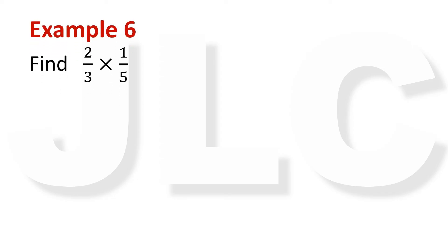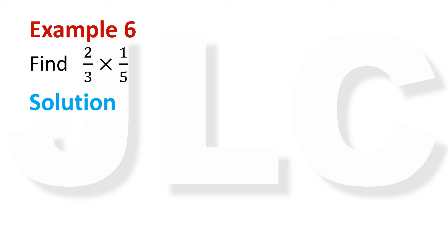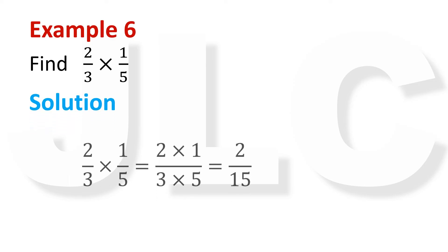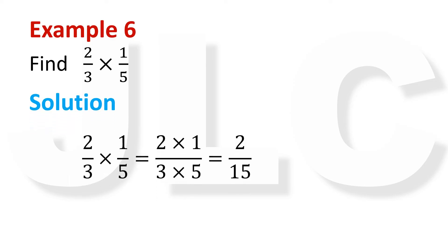Example 6: Find 2 thirds times 1 fifth. Using example 5, 2 over 3 times 1 over 5 is equal to 2 times 1 over 3 times 5, which equals 2 over 15.